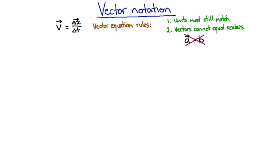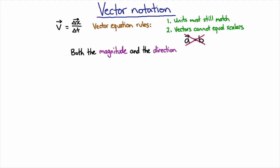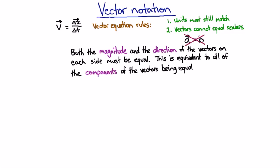Let's remind ourselves one more time what the equation means. For a vector equation, both the magnitude and the direction of the vectors on each side must be the same. Vanessa showed us that this means all the individual components of each vector have to be the same. So if you have one vector and want to say it's the same as another vector, the vector components in each direction must be the same.